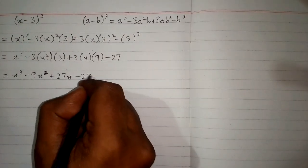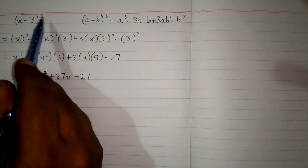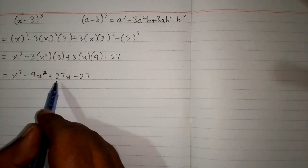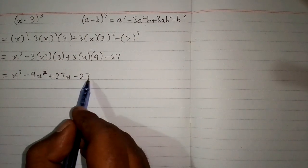Therefore (x - 3)³ is equal to x³ - 9x² + 27x - 27.